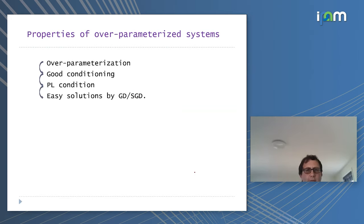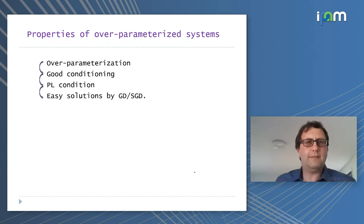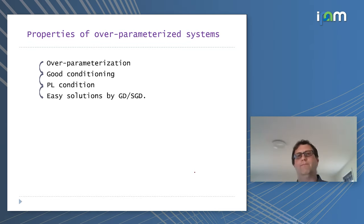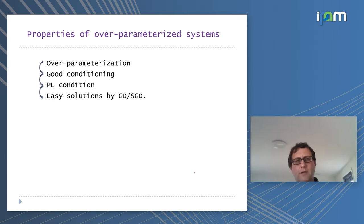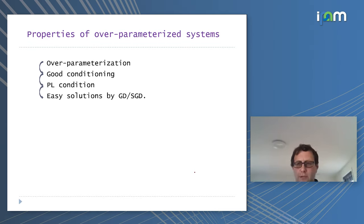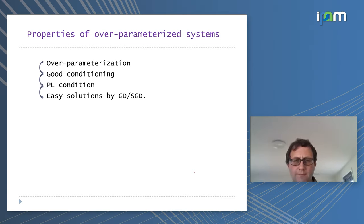To summarize: over-parameterization leads to good conditioning, which gives you the PL condition. Once you have PL, you control gradient descent and SGD via Polyak's argument — and it converges efficiently.